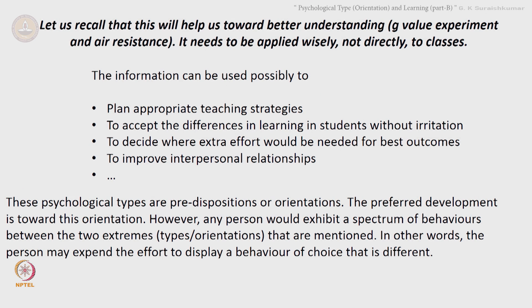Here we are looking at psychological types or orientations. These psychological types are predispositions or orientations. The preferred development is toward a particular orientation. However, any person would exhibit a spectrum of behaviors — what we find in reality is going to be a mix of these concepts, a spectrum of behaviors between the two extremes. A person may expend the effort to display a behavior of choice that is different.